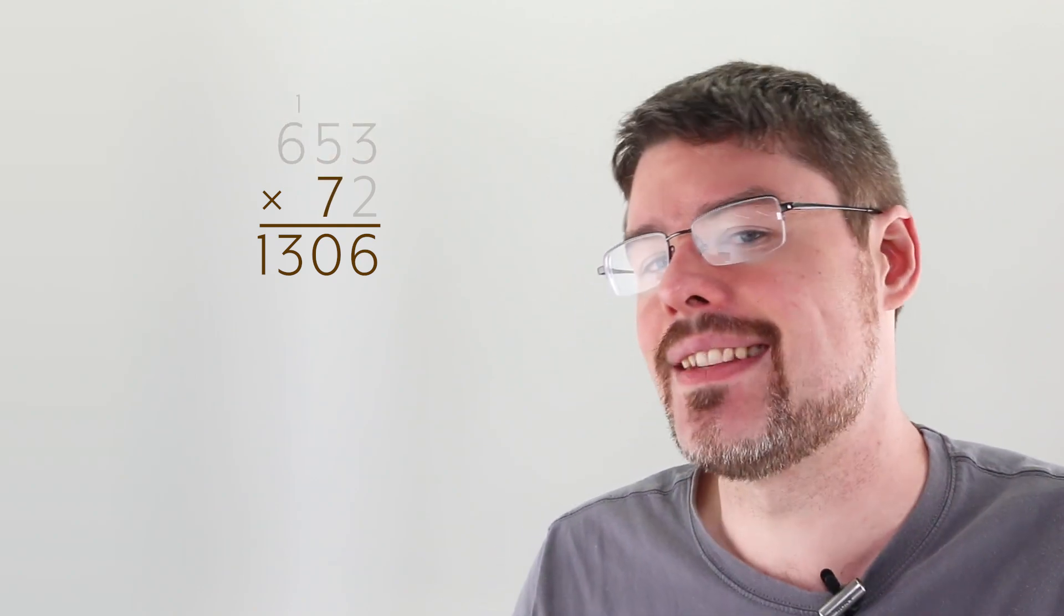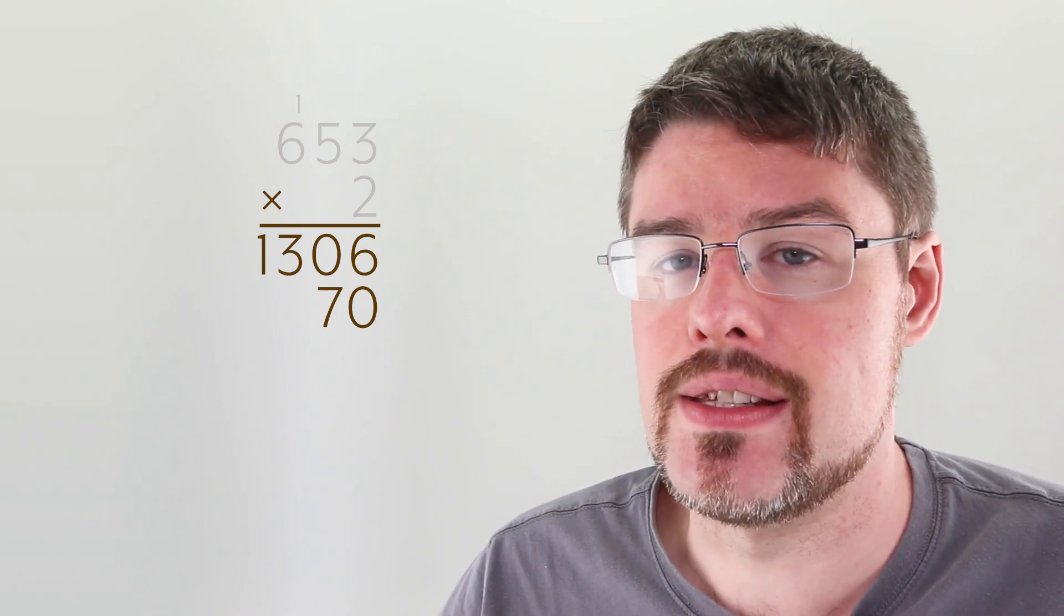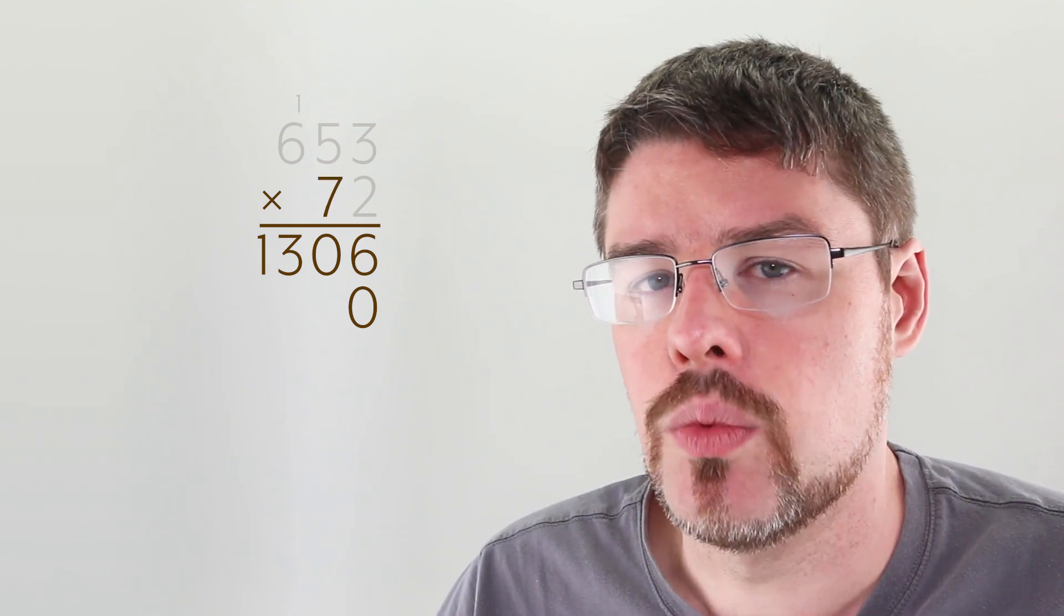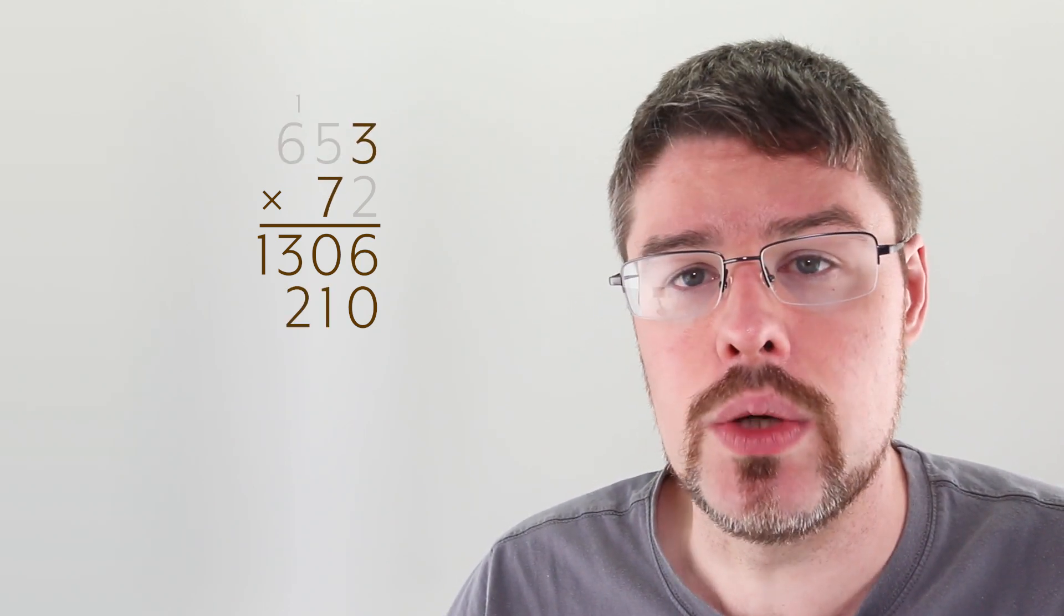Now our next step is we're going to multiply the next number in our bottom number, the 7, times the numbers in the top again. We're going to add a 0 in the bottom, because what we're really doing is multiplying that top number by 70. What that means is there's a 7, 0 there, and we're going to put that 0 at the bottom. So we're going to multiply the 7 itself by all those numbers on top. We have 7 times 3, which is 21, so we'll put the 1 here, and we'll carry the 2.